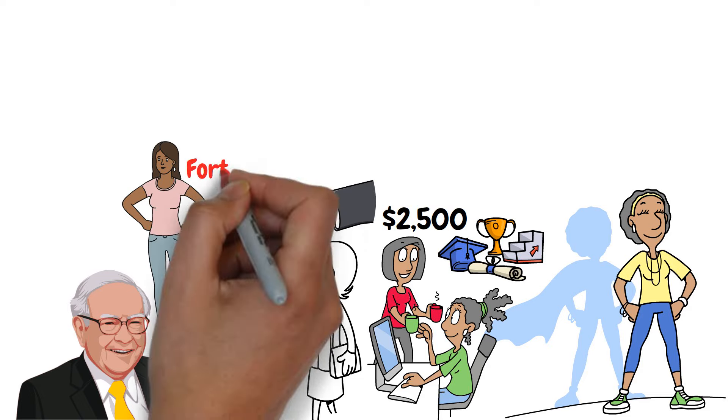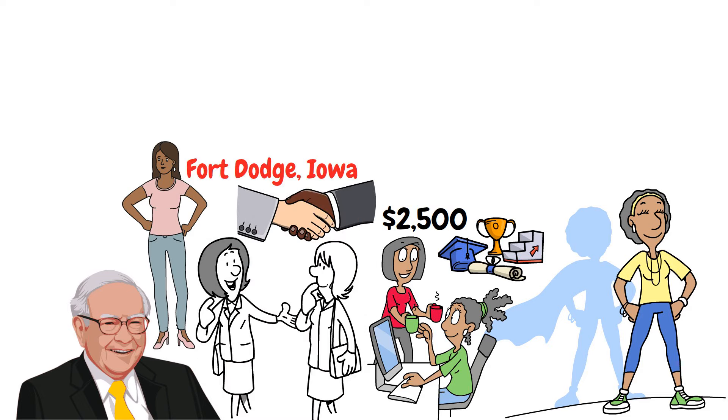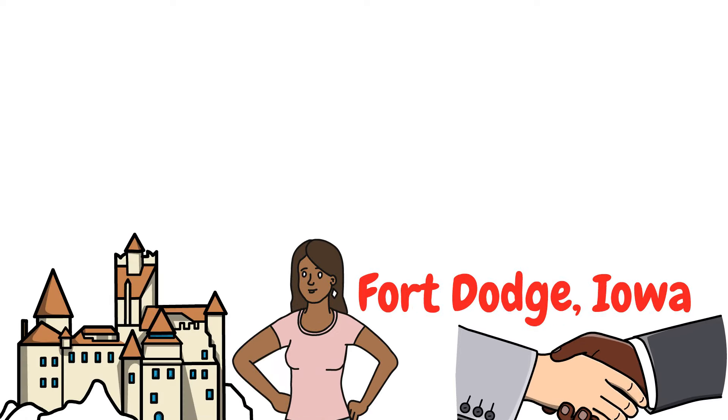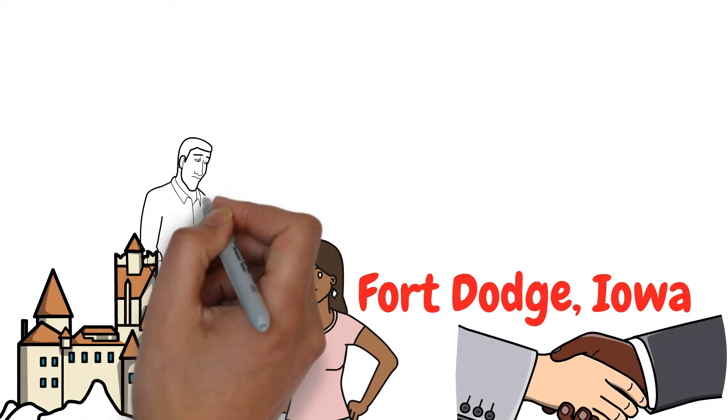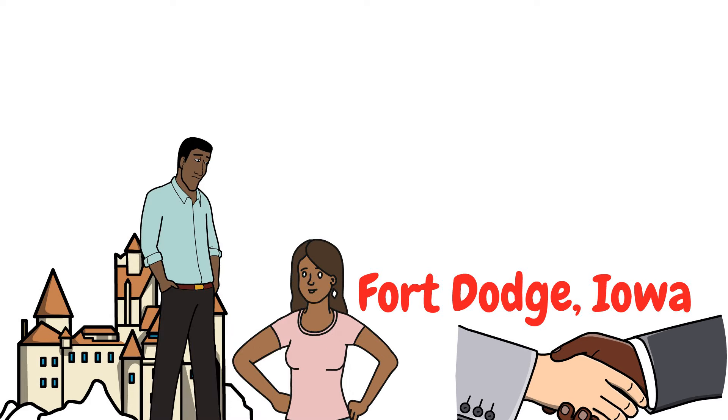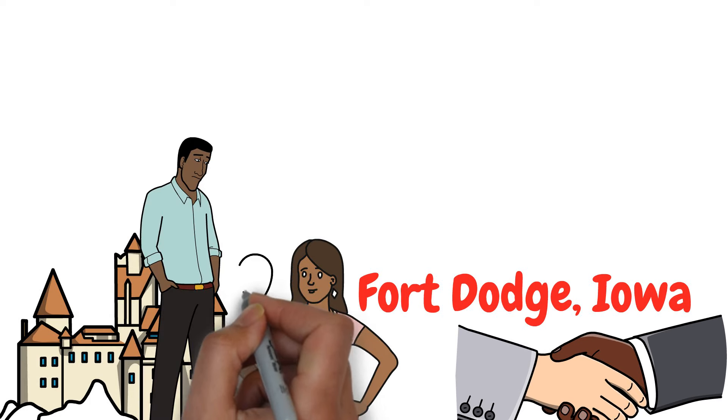One woman, Rose Blumkin, arrived in Seattle in 1917 without knowing English and only a tag around her neck that read Fort Dodge, Iowa. With the help of the Red Cross, she reached Fort Dodge to join her husband who had moved to America earlier.